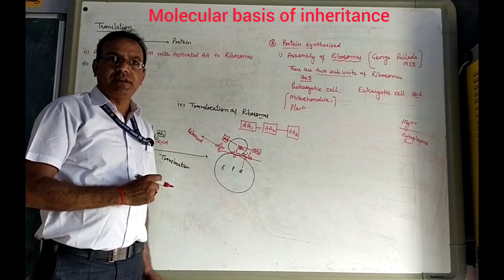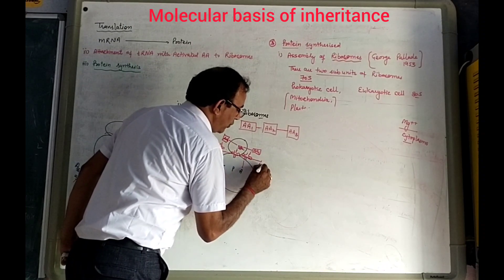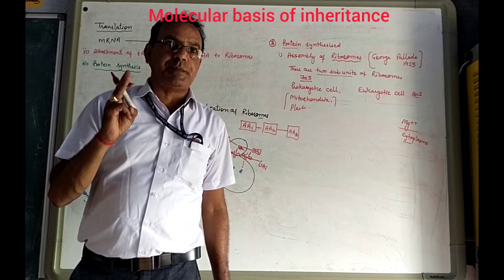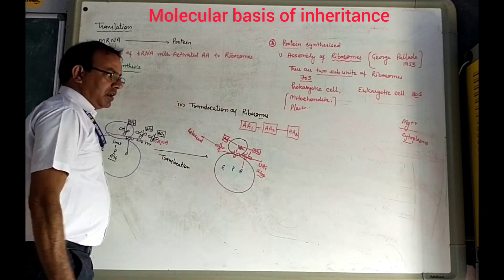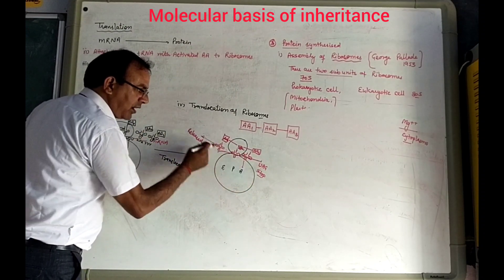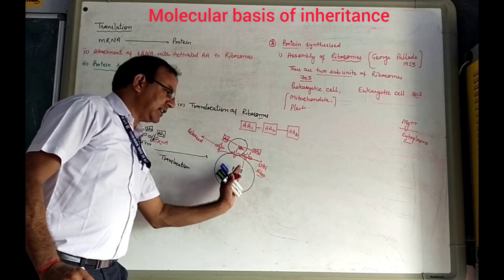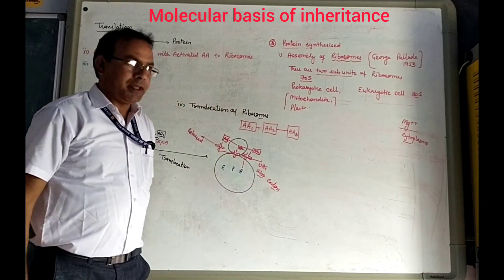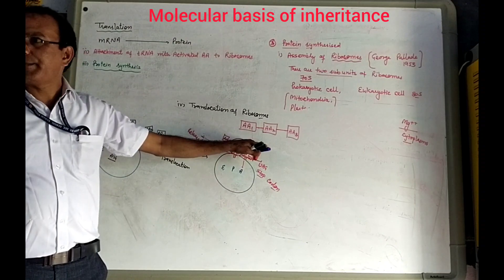How does this process stop? Suppose the next codon is UAG. We know that out of 64 codons, 3 codons do not represent any amino acid — those are called stop codons. UAG is a stop codon. As the ribosome moves and UAG comes at the A site, the process of translation stops, and the new sequence of amino acids — that is, the protein — has been synthesized.